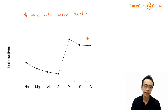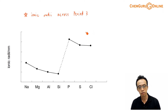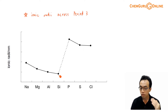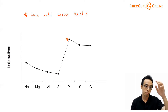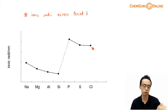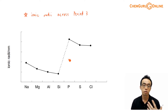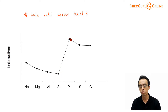Next, how about ionic radii across period 3? The ionic radii trend is pretty interesting — from sodium to silicon it decreases, but from silicon to phosphorus the radii jumps up, and then from phosphorus to chlorine it decreases again. There is a very big jump in ionic radii from silicon to phosphorus, so how do we explain this?